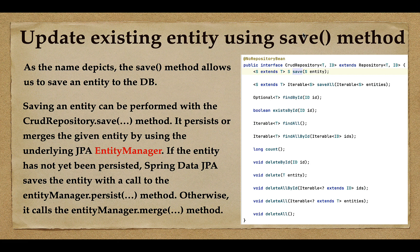We can use the save method to perform two operations: a save operation as well as an update operation. In the case of a save operation, save method internally uses the EntityManager's persist method, and in the case of an update operation, save method internally uses the merge method to merge the updated information.